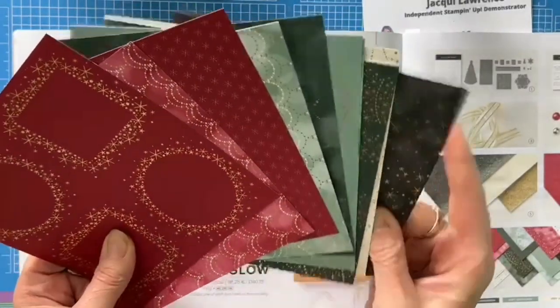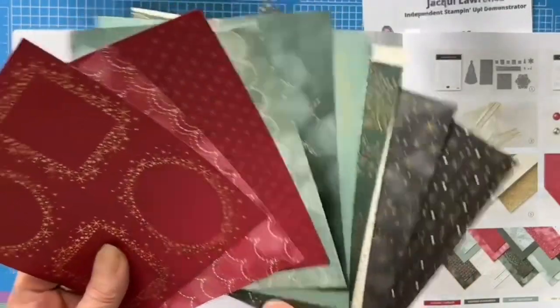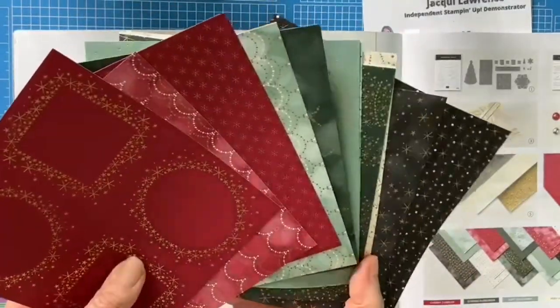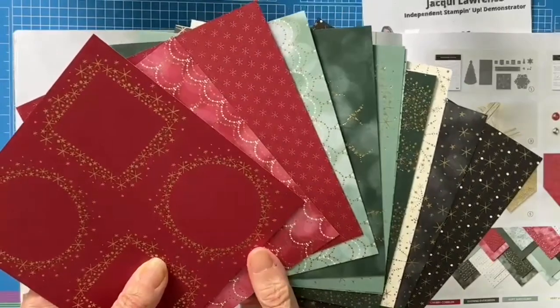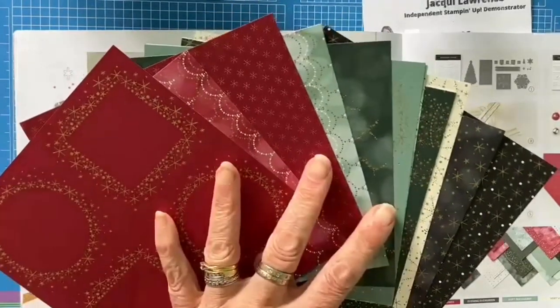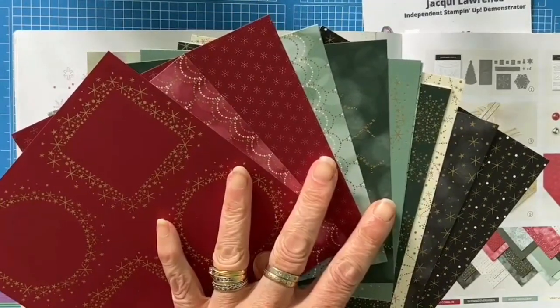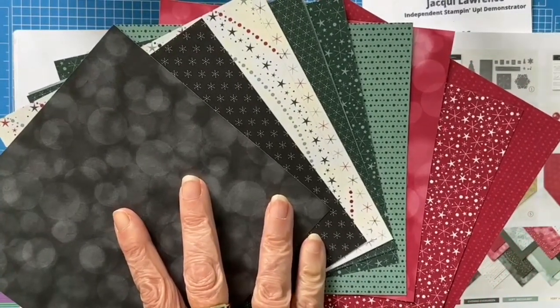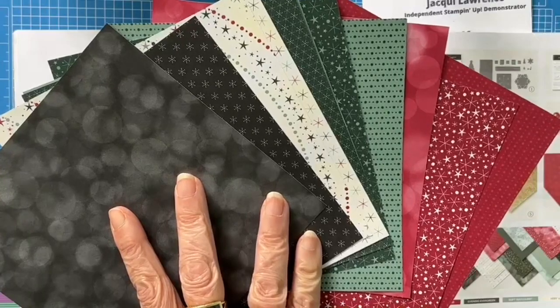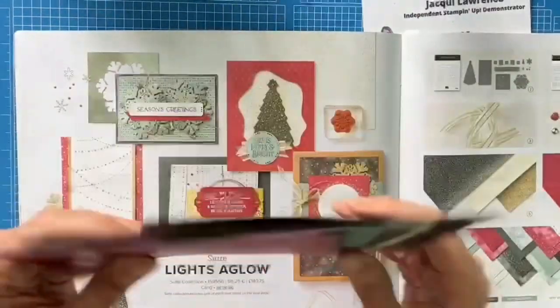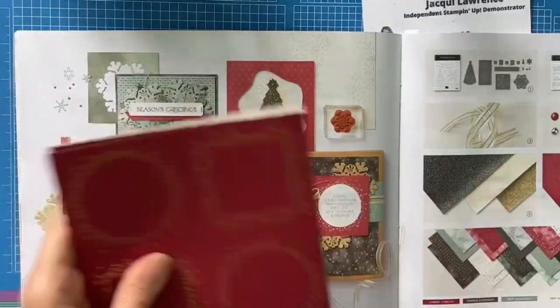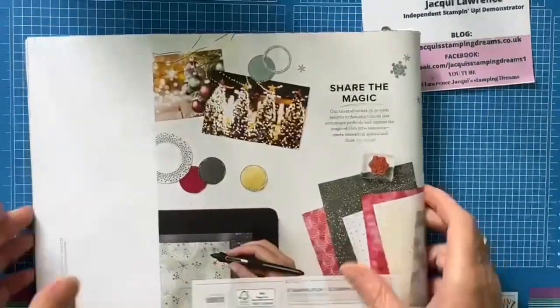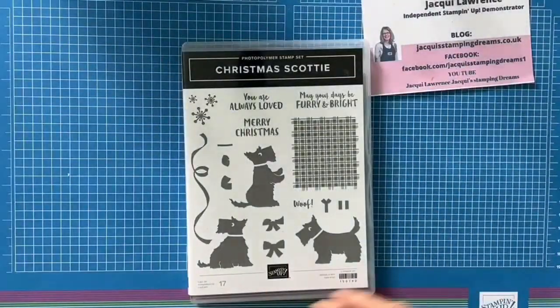So let's just spread those out because you have got the black, you have got cream and you have got the greens and the red, and on one side they have all got a gold element running through them. And then if I turn those over you will find that they are just more muted tones on there. I absolutely love these papers, I think these are one of my favourite papers going.